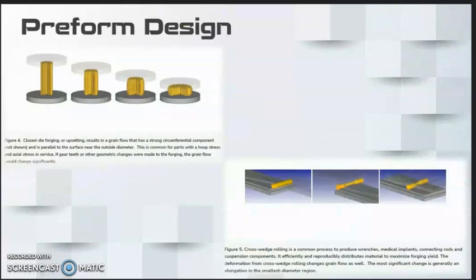The billet that arrives in the forge shop has an initial grain flow that is generally longitudinal. Preform operations are used to change the geometry, microstructure, and grain flow. In each preform operation, material flows in the path of least resistance with no influence from future operations.